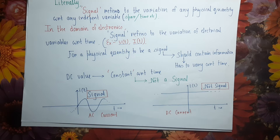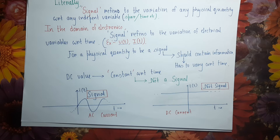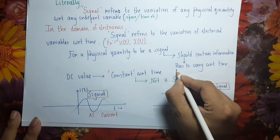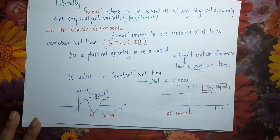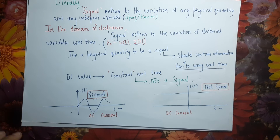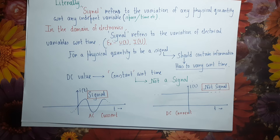For a physical quantity to be referred to as a signal, it should contain some variable information. If a physical quantity is constant with respect to time, there is no information of interest. So for a physical quantity to contain information, it should necessarily vary with respect to time. Therefore, DC values, which are constant with respect to time, are not signals because they do not contain any valuable information.